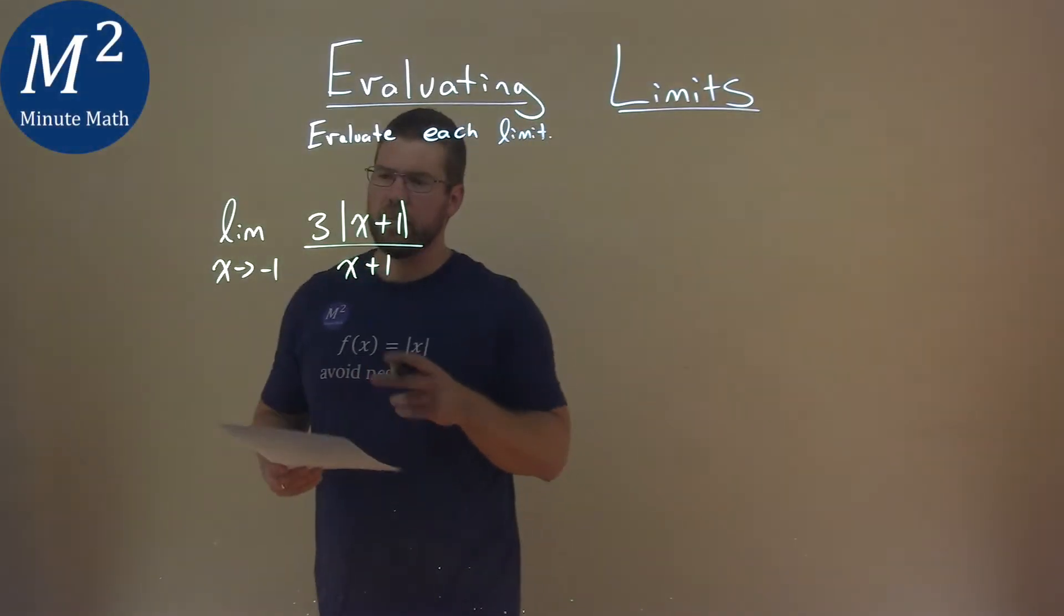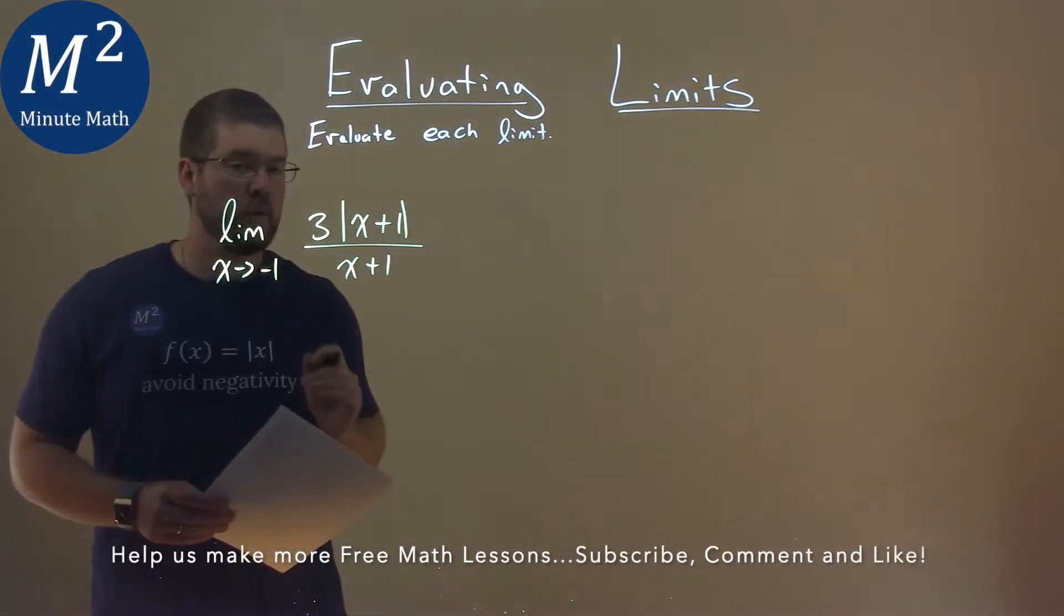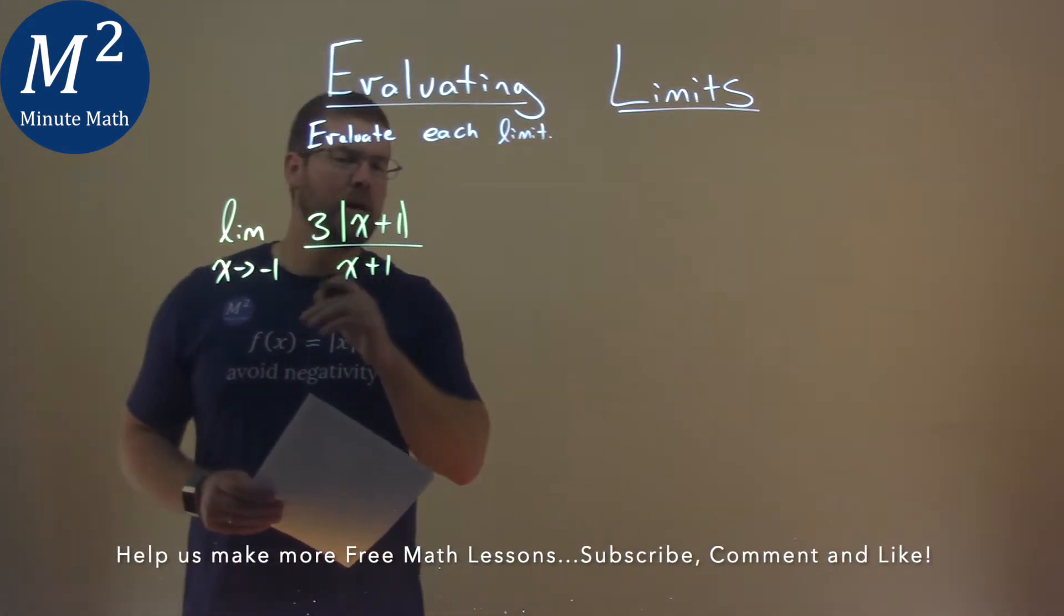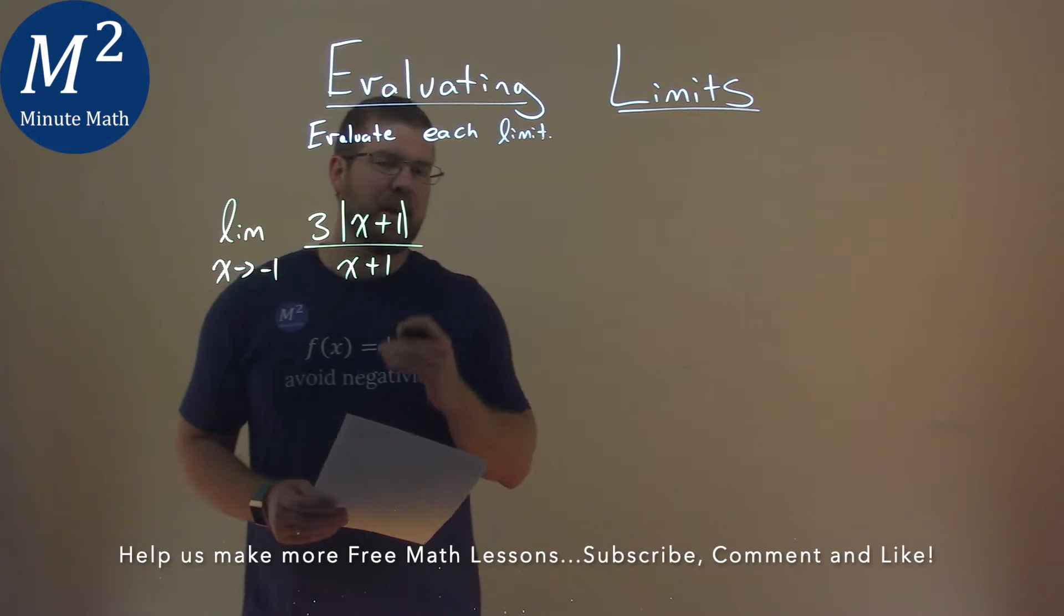We're given this problem right here. The limit as x approaches negative 1 of 3 absolute value of x plus 1 over x plus 1, and we need to evaluate this limit.